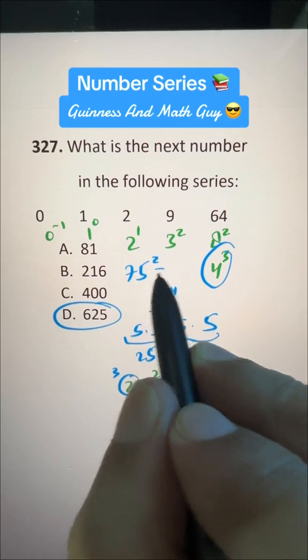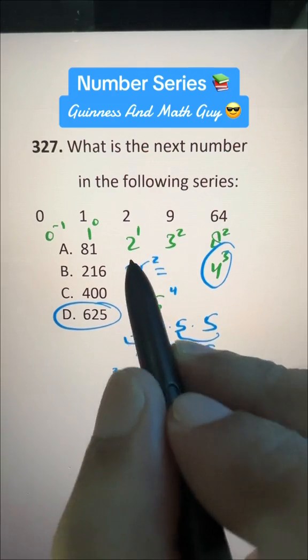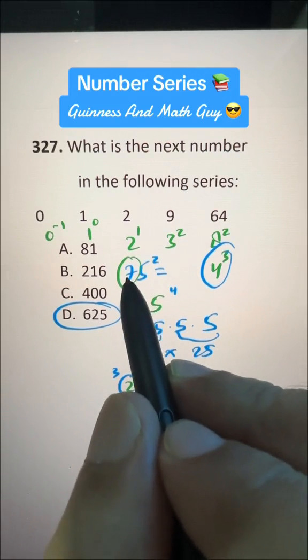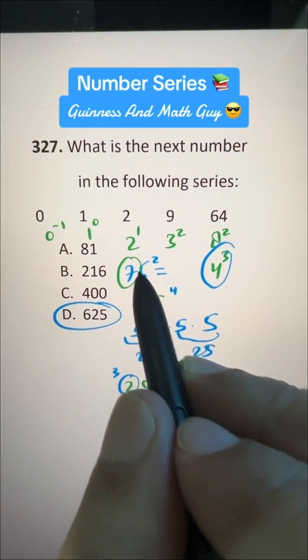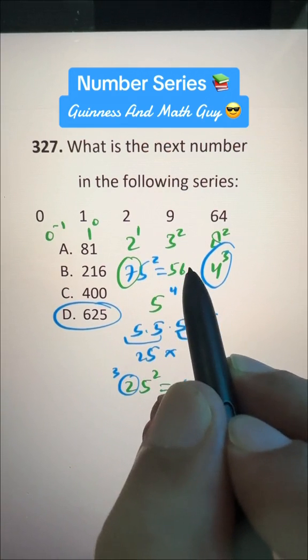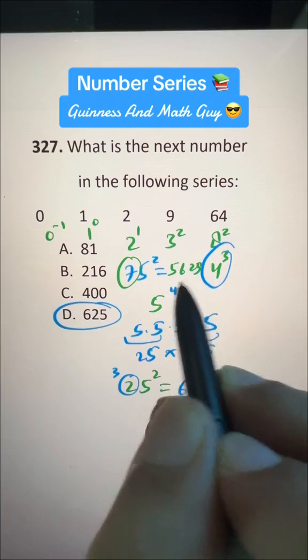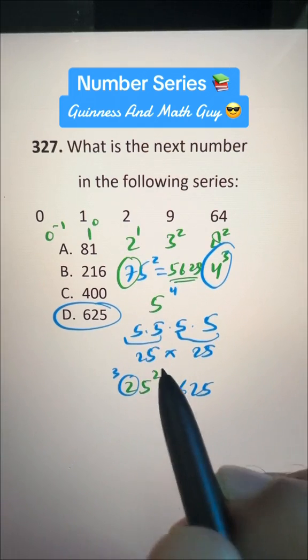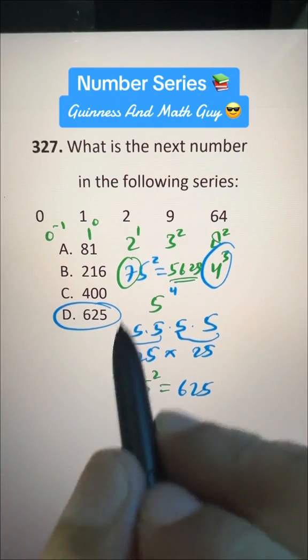If we have, let's say 75 squared, then the number beside 5 is 7. So 7 times the next number, 8, is 56, and then write 25. That's our answer for 75 times 75. That's our answer for this question.